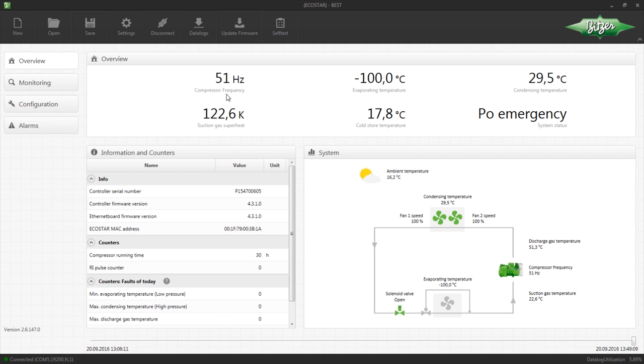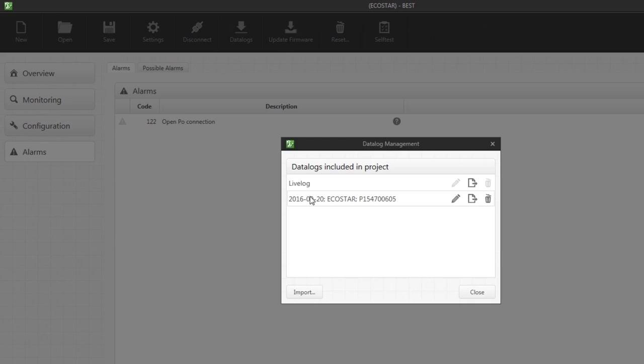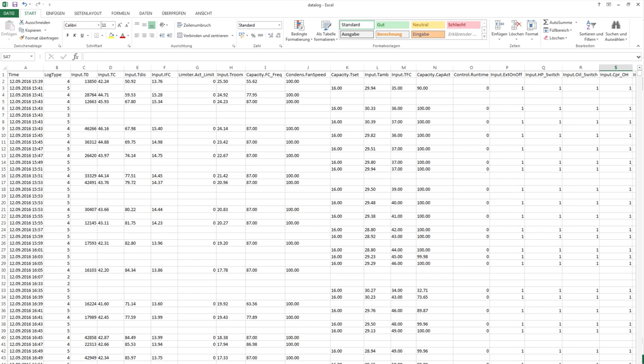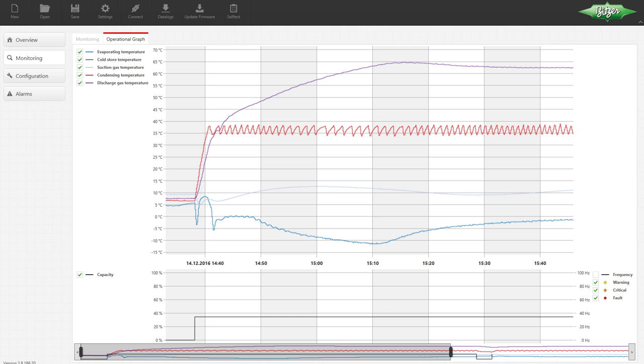A complete data log of the recorded operating parameters and alarms can be generated and displayed in an Excel file. The integrated live log function displays the recorded operating parameters in a very straightforward chart.